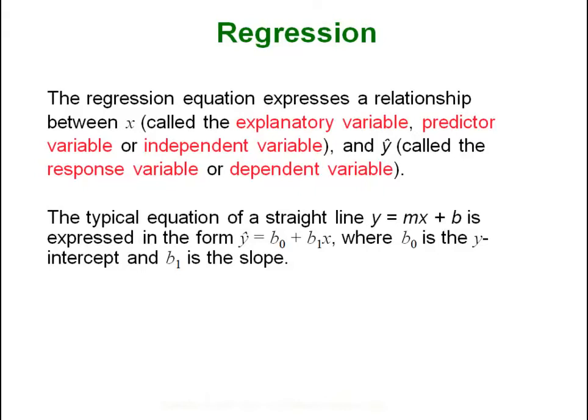We know that the typical equation of a straight line is y equals mx plus b. When we are dealing with regression equations we use y-hat because these are now predicted y's instead of an observed y. And instead of m and b we use b-sub-zero and b-sub-one, where b-zero is the y-intercept and b-one is the slope. It is the same intercept-slope idea for any straight line, just with different letter designations.